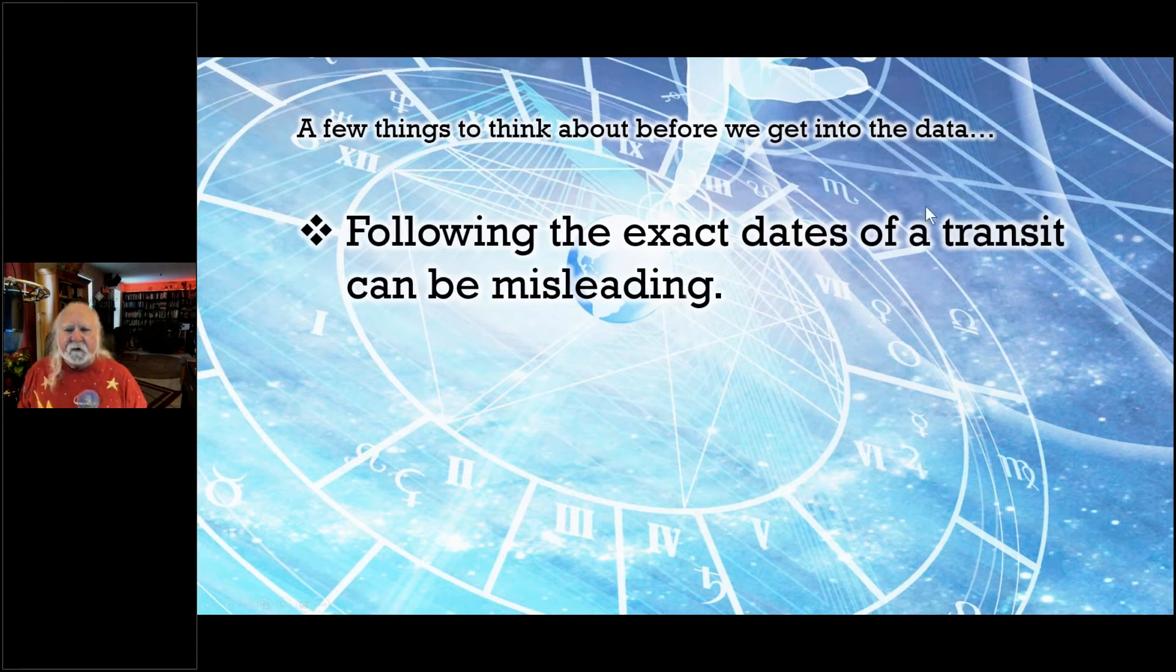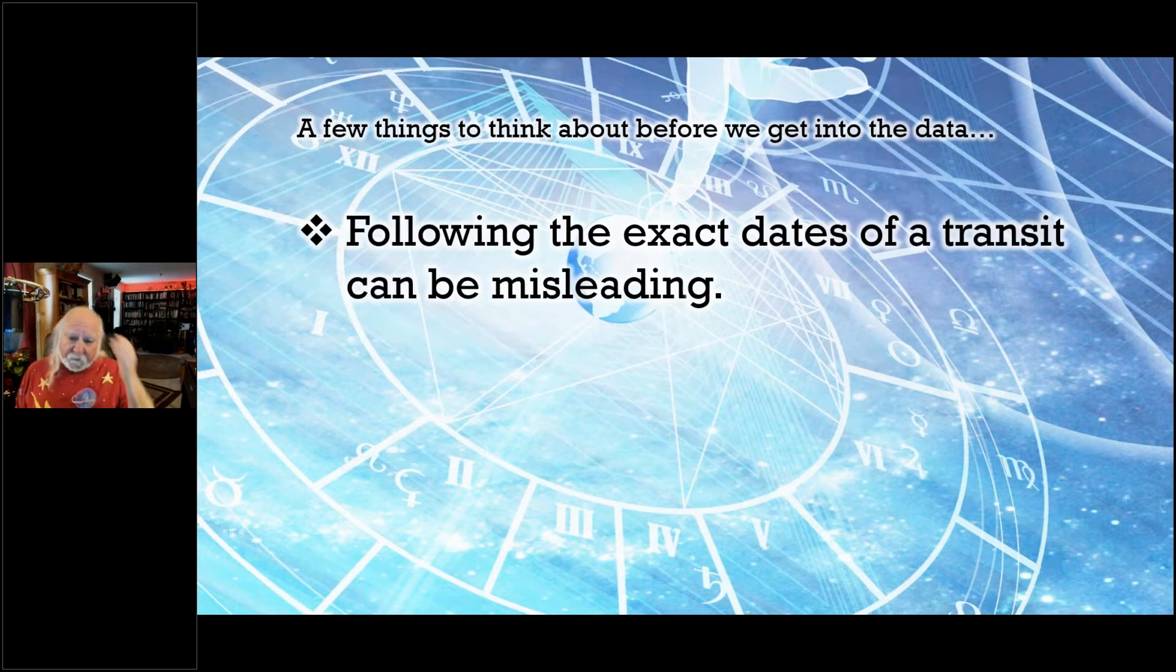First of all, following the exact dates of a transit can be misleading. This is true whether we're doing natal astrology or mundane astrology, and I actually call it, because the word mundane comes from a Latin word, mundus, which is world. I actually like to call this world transits. In world transits, we're typically looking at the slower moving planets in order to get a sense of how the rhythms are established. We can have an exact date for a transit, or in some cases, because of a direct retrograde direct, there can be three dates to that.